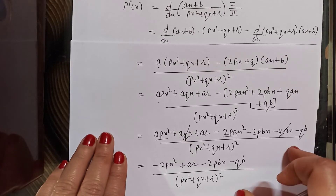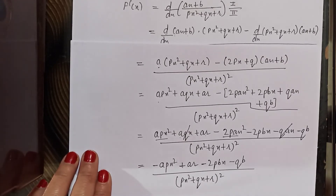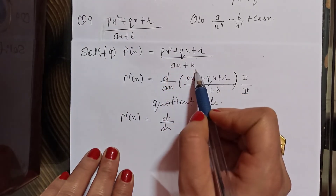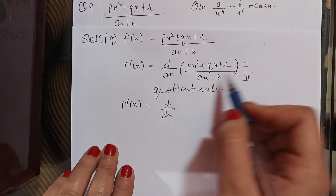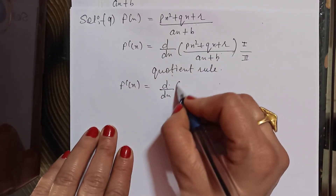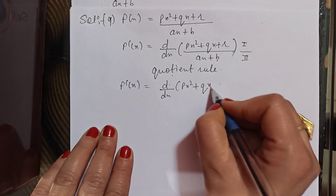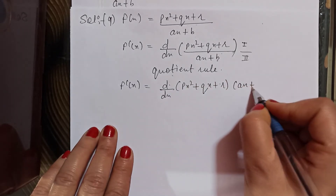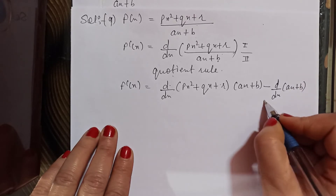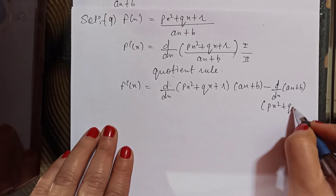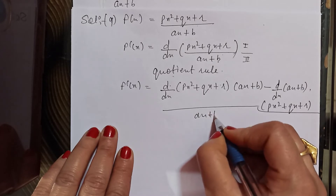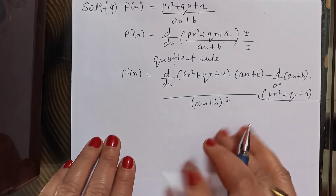Next, question number 9: the function given is (px² + qx + r) upon (ax + b). Again this is in p/q form — first function upon second function — so we apply the quotient rule. Derivative of first function times second as it is, minus derivative of second function times first as it is, upon (ax + b)².